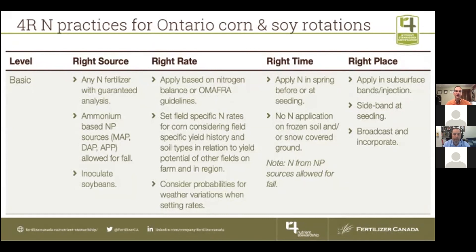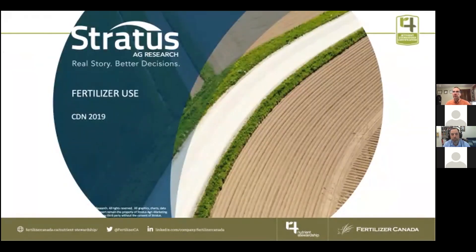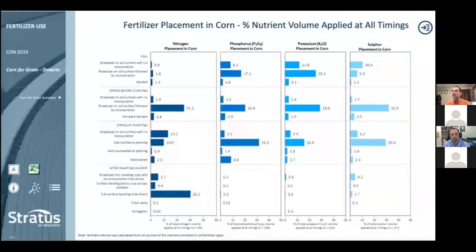Here are the basic level practices for nitrogen use in Ontario corn-soybean cropping systems. We only fall-apply nitrogen if it's associated with a phosphate that might be fall applied. We require inoculation of soybean, set rates field-specifically using either a nitrogen balance or OMAFRA guidelines calculators, no application on frozen or snow-covered soil, and right place is in the soil whenever it's not applied as a top dress to a living crop. These are the 2019 results from a recent survey conducted by Stratus Ag, and the survey is ongoing in 2020 as well.